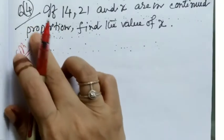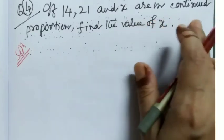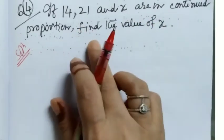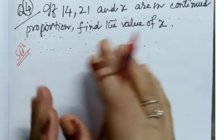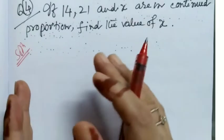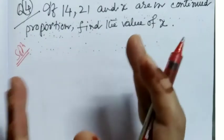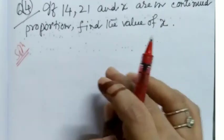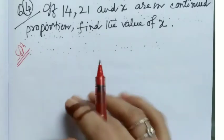Question number 4. If 14, 21 and x are in continued proportion, find the value of x. This is a problem on continued proportion. And we know in case of continued proportion, all total 3 terms are there, and both the middle terms remain same, which comes twice.